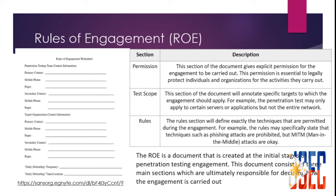So what to consider while performing a penetration test? Some of the directives that should be clearly spelled out in the ROE before you start the penetration test are as follows. The types and scope of testing, which ensures that all parties know exactly what type of testing will be performed — whether it be an external penetration test, an internal penetration test, or some other form of testing.